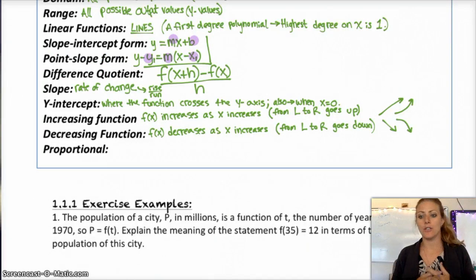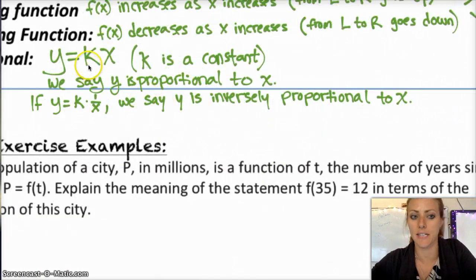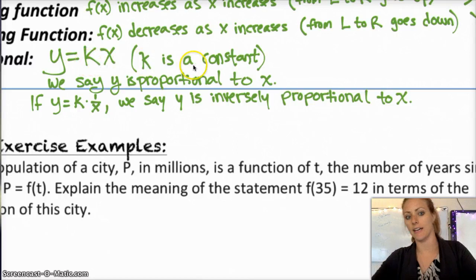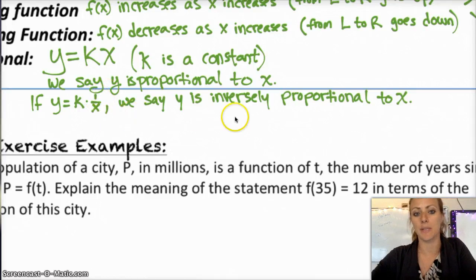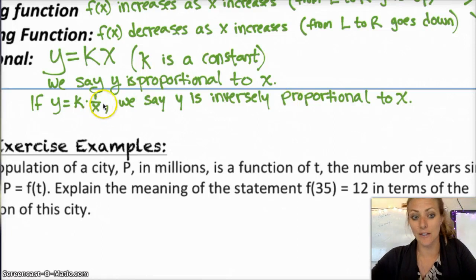The last thing is proportionality. We say that y is proportional to x if you can write the relationship as y equals some constant times x. And we say that y and x are inversely proportional if y equals some constant times 1 over x. So k is a constant. If y equals like 3 times x, then y is proportional to x. But if y equals 3 times 1 over x, then we'd say that y is inversely proportional to x because they're on opposite sides. As x increases, y would decrease. And over here, as x increases, y also increases.